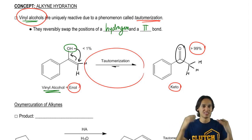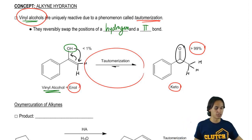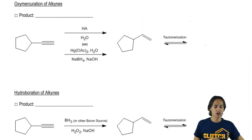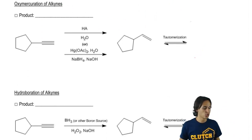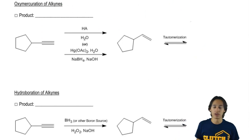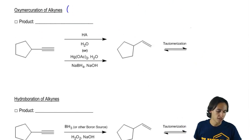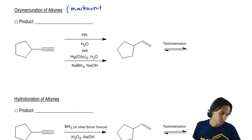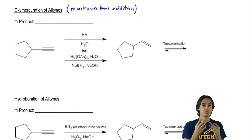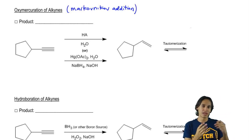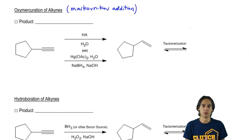Now exactly which product do we get? Let's look at each specific reagent. There is oxymercuration of alkynes and there's hydroboration of alkynes. When we do an oxymercuration of an alkyne, we're doing a Markovnikov addition of alcohol. Oxymercuration is one of the most popular ways to add a Markovnikov alcohol, and the same applies for a triple bond.